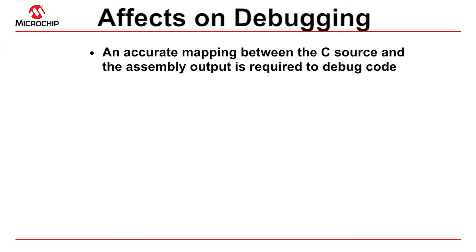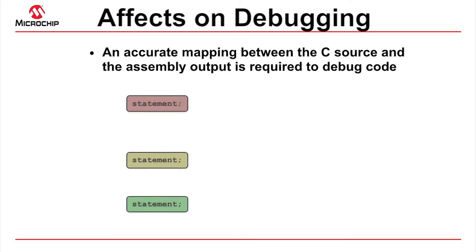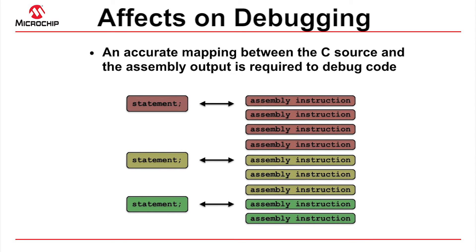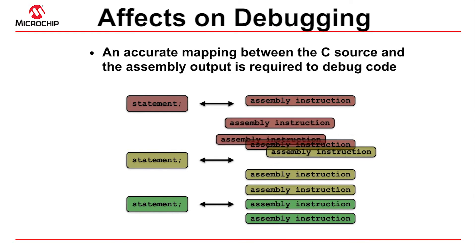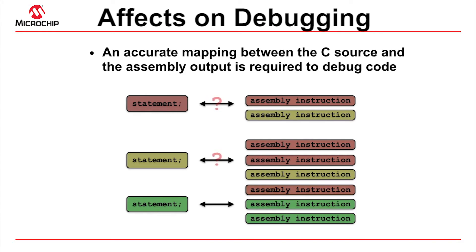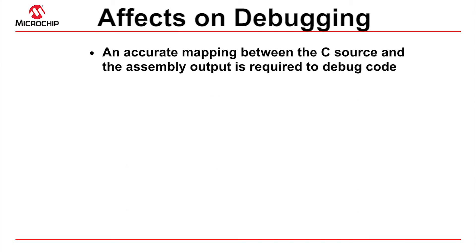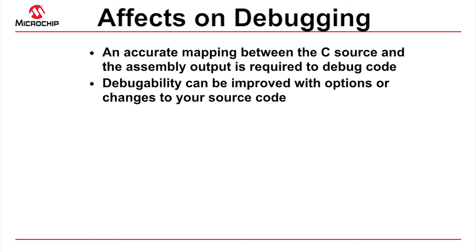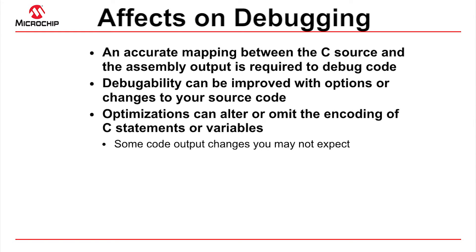Source level stepping, breakpoints, and variable watches require an accurate mapping between the C source and the corresponding assembly. Changes made by optimizations can alter this mapping, but will never change the operation of your program. Being aware of the possible changes made by optimizations will help you analyze code operation. Let's now look at some of the optimizations you might encounter.